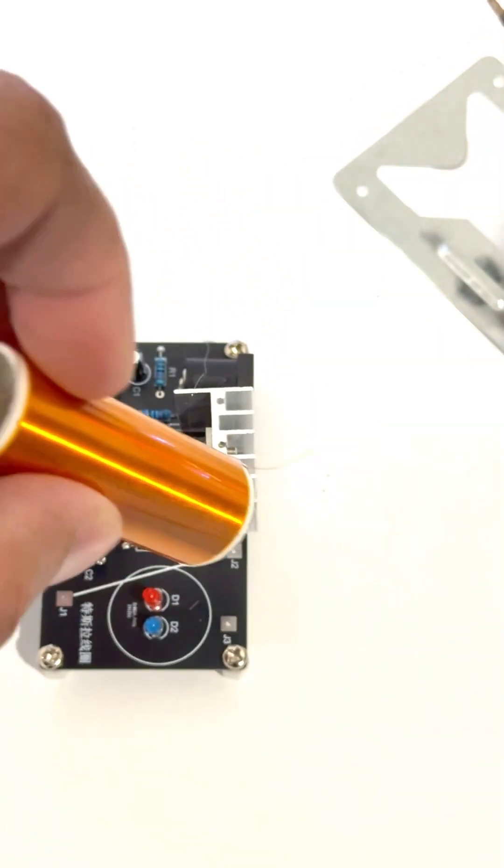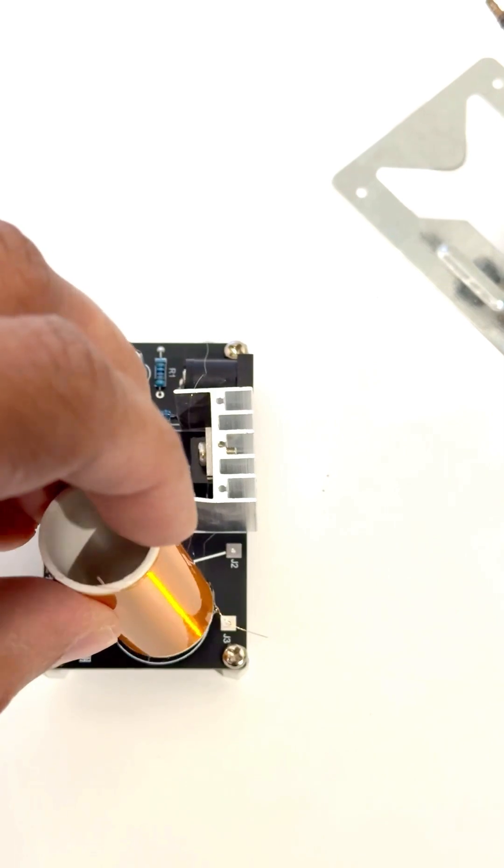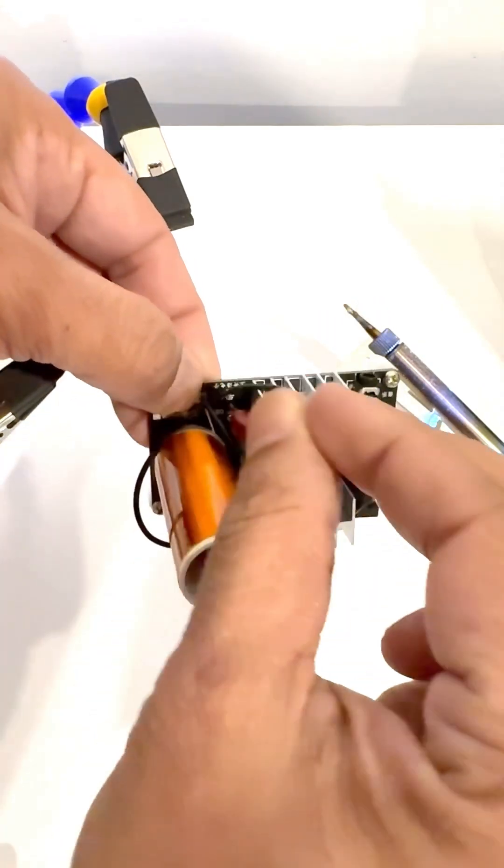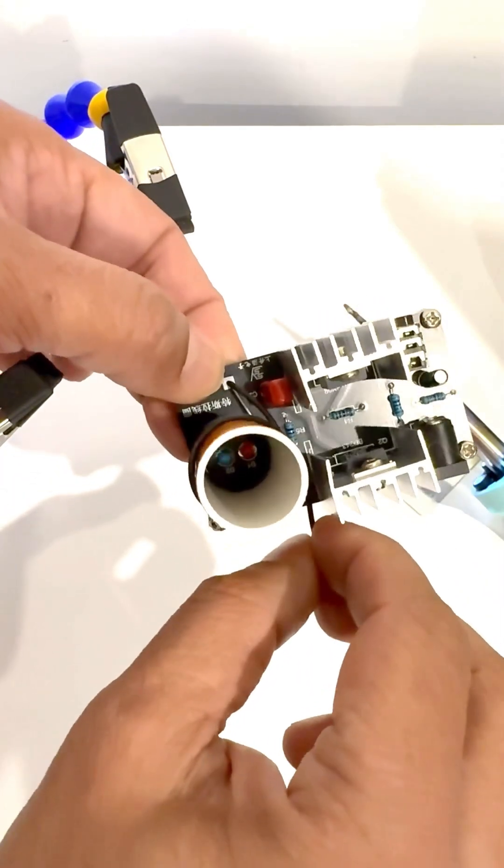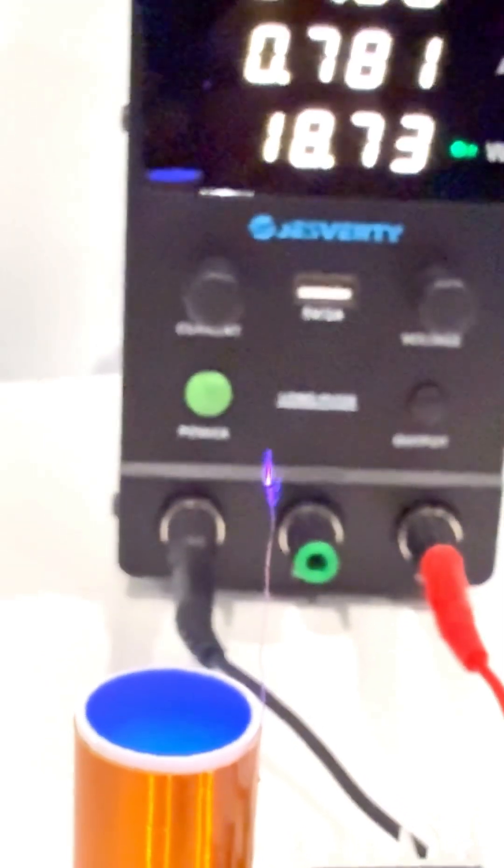A Tesla coil lights a bulb by using its high-frequency, high-voltage electric field to excite the gas inside the bulb, causing it to glow. This is achieved through a process of ionization and energy transfer.